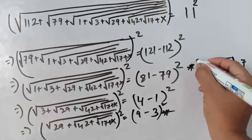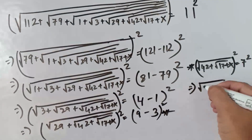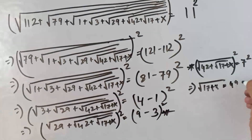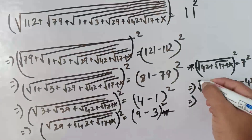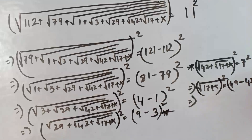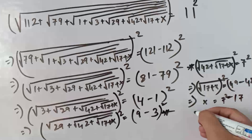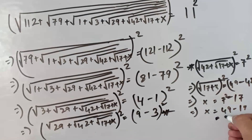Now again square both sides of this equation. So we get square root of 17 plus x equals to 49 minus 42, which is 7. So again we just square both sides of this equation. We can write x equals to 7 squared minus 17, that means x equals to 49 minus 17. So it comes 32.